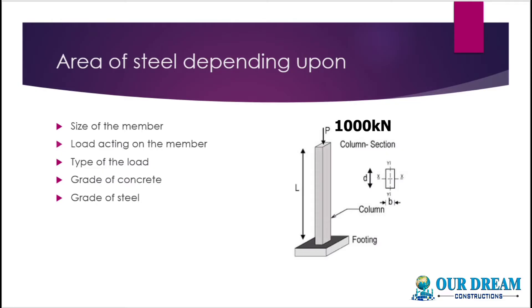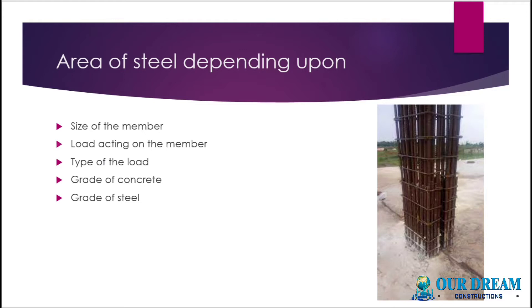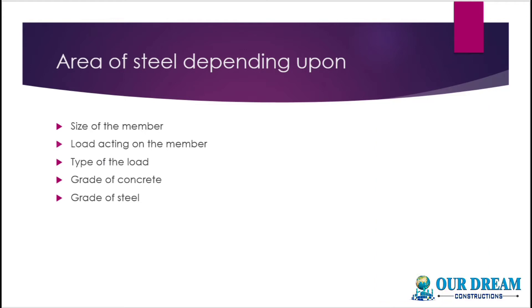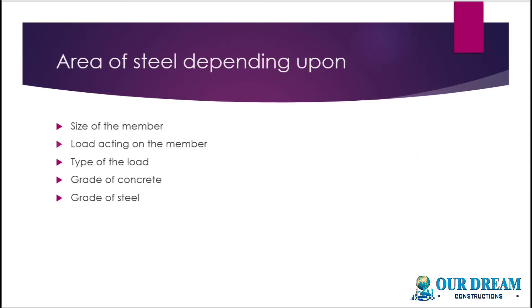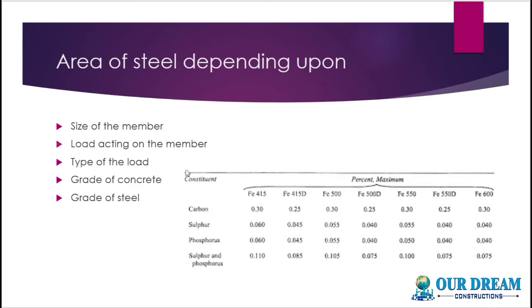If you have 1000 kNm, that is the load value. The diameter of bars or number of bars — so if you have 2000 kNm, this is the area of steel. That's the type of load — axial load or biaxial load. There is the concrete grade: M20, M25 — that gives the area of steel. That's the grade of steel; you use Fe500 or 550 or 550D. Grade of steel means you use the area of steel accordingly.